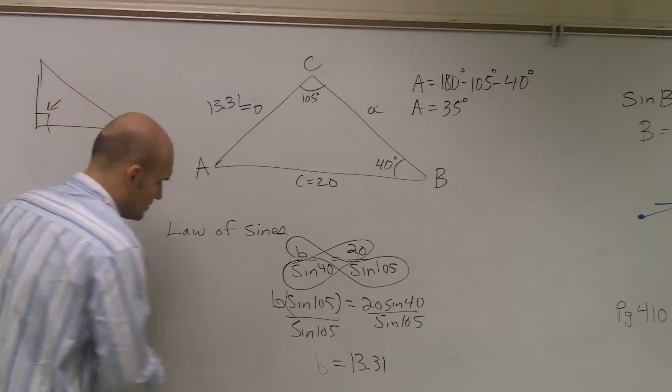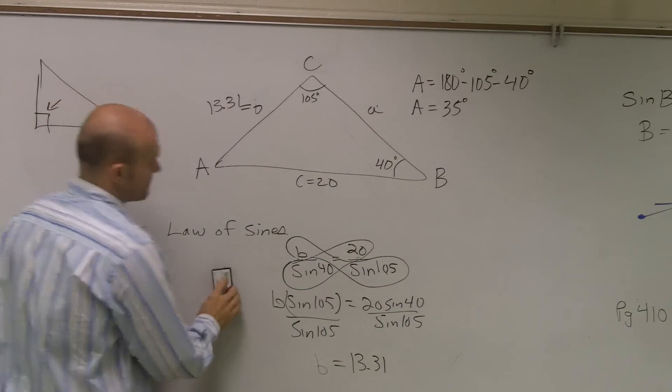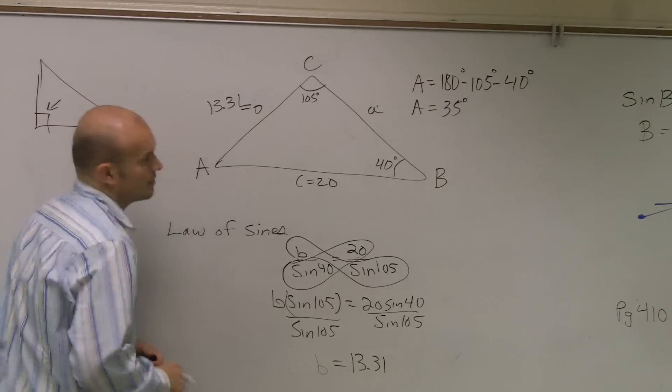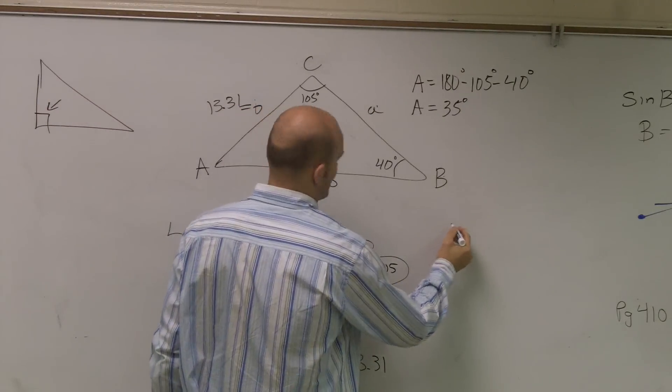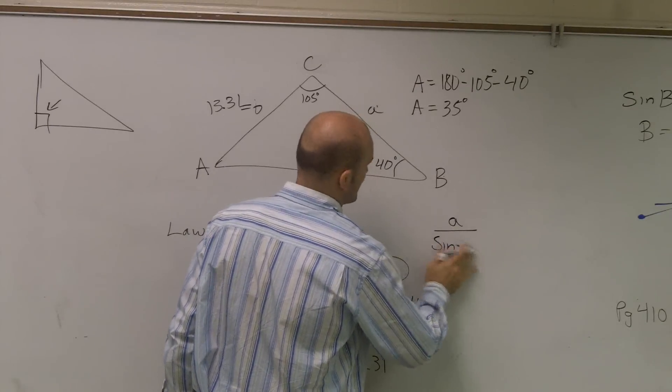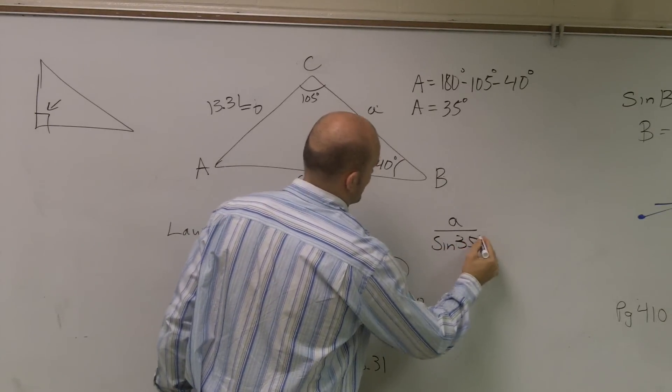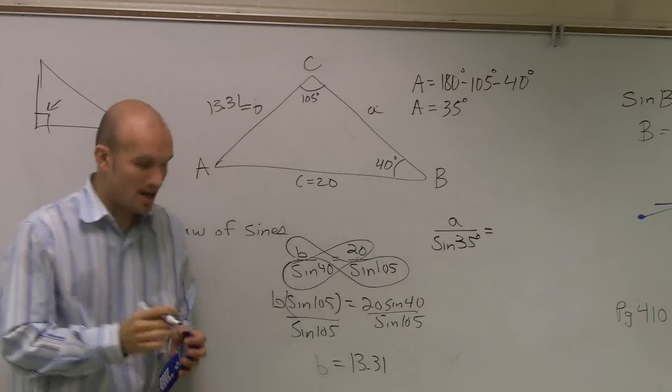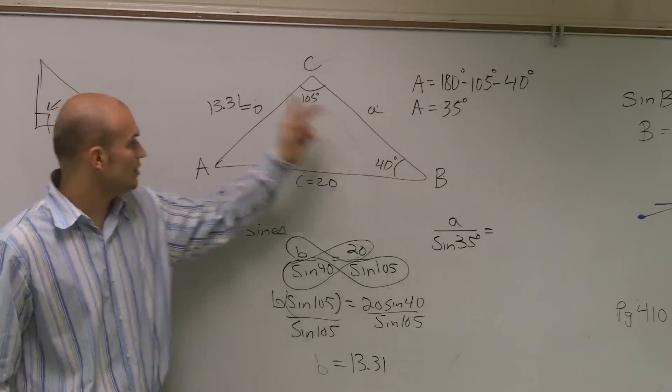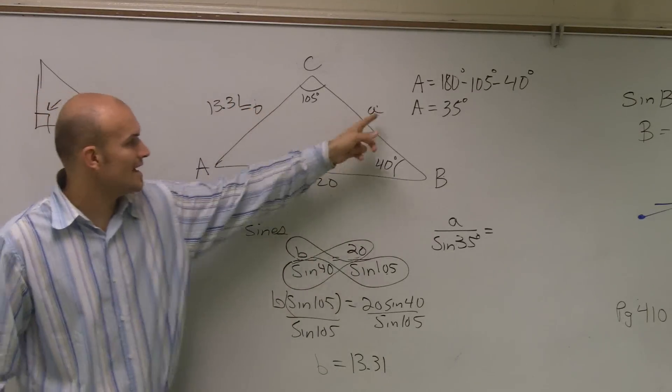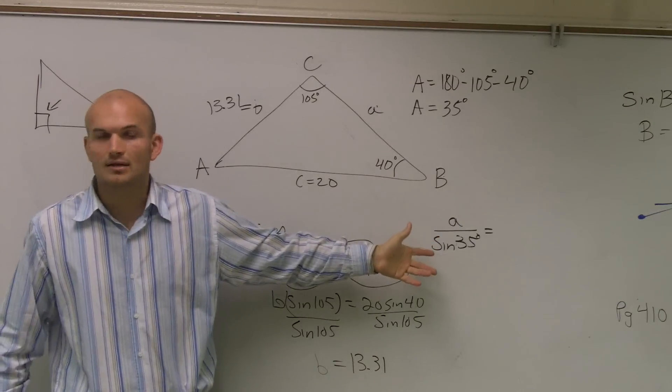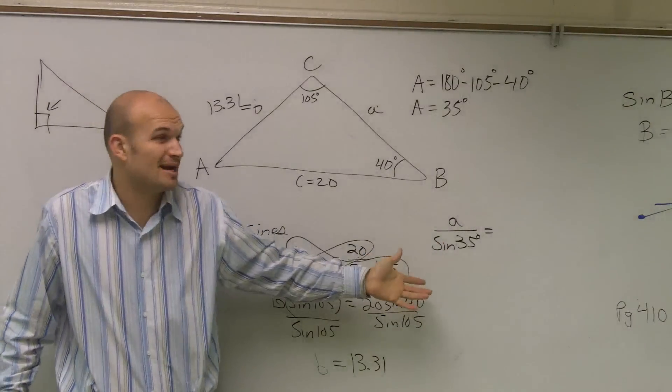So now let's go back and use a proportion here. We have A over sine of 35 degrees equals... Now, we already know everything for B and everything for C. We have the angle and the side length for B and the angle and the side length for C. So which proportion do you want to set A equal to? B or C? It doesn't really matter.